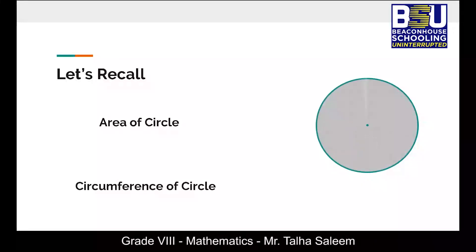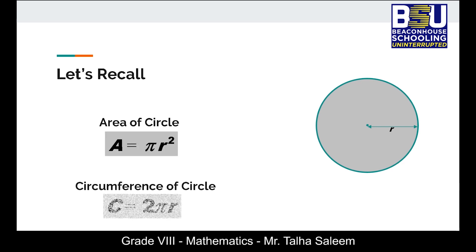From our previous knowledge, we can recall that the figure we are seeing on the screen right now is a circle. And the line segment that joins the center of the circle to any part on the boundary is called radius. We can also recall two important formulas: area of a circle given by πr² and the circumference of the circle which is given by the formula 2πr.